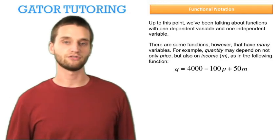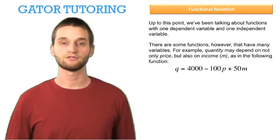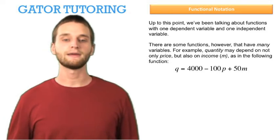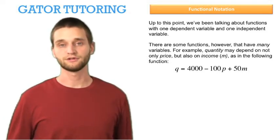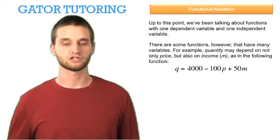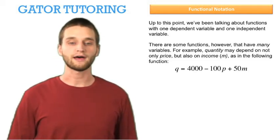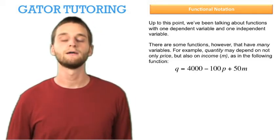There are some functions, however, that have many variables. For example, quantity may depend on not only price, but also on income, which we will denote M, as in the following function: Q equals 4000 minus 100P plus 50M.